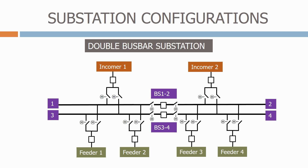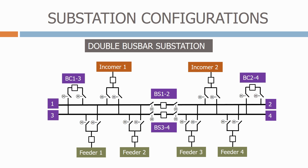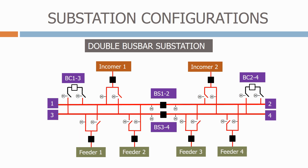Another popular configuration is a double bus bar station. This configuration provides multiple options for connecting the incomers and feeders together. In this arrangement we have four bus bars. Each of the incomers and feeders can be connected to one of two bus bars using the bus bar isolators. We can also add bus coupler circuit breakers to connect the upper and lower bus bars together. The normal configuration is for each incomer to feed two bus bars. One feature of this arrangement is that we can change which bus bar a feeder is connected to without disconnecting the load — this is done using what's called a non-load changeover sequence.